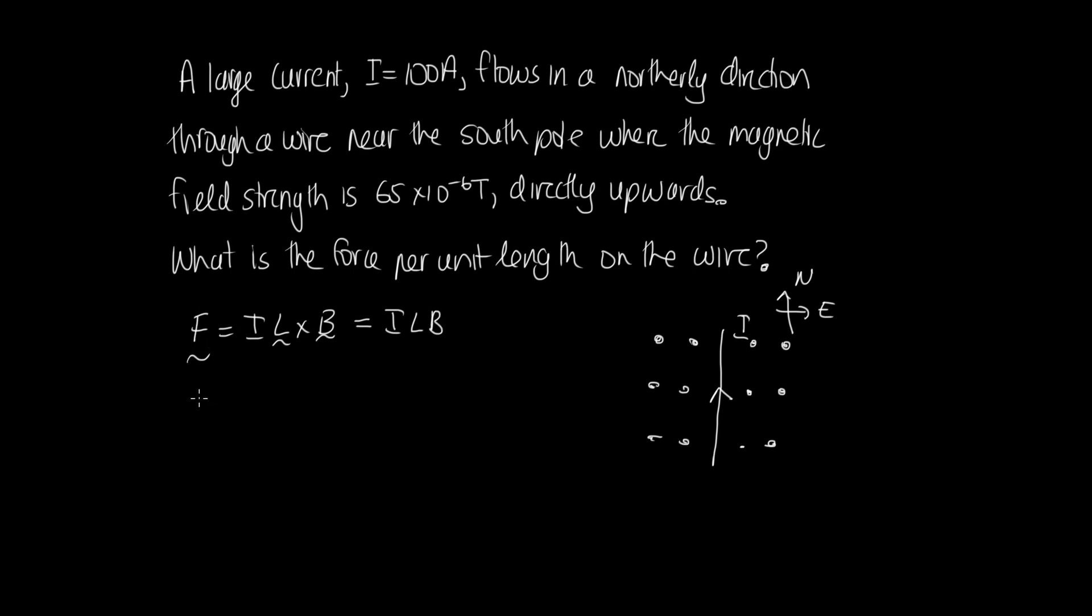And we're asked to calculate the force per unit length. So what we want to know is, what's F over L? And that will be equal to IB. So this is equal to 100 times 65 times 10 to the minus 6. And so solving that, we end up with 6.5 times 10 to the minus 3 newtons per meter.